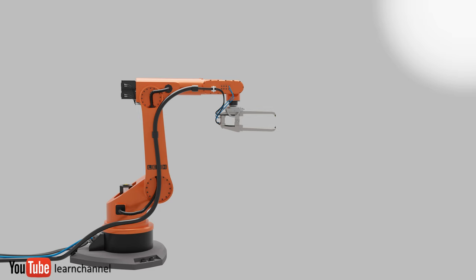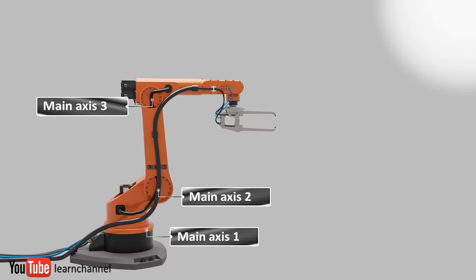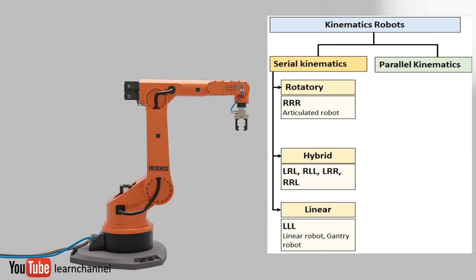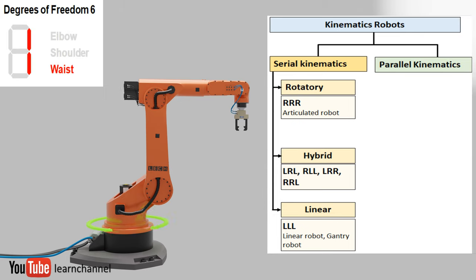Its main axes are rotary, after which this robot is classified as 3R. In general, every industrial robot must have 3 main axes in order to be able to move freely within 3-dimensional space.